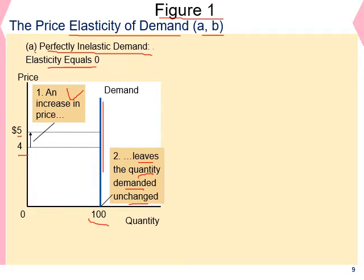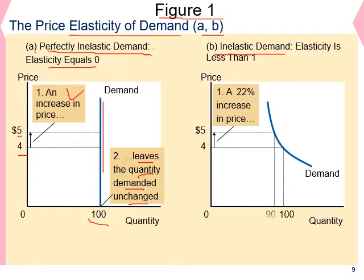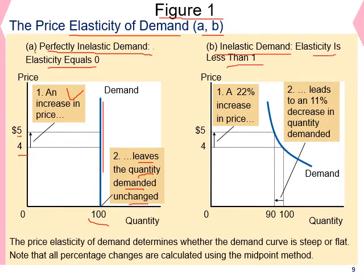An example of perfectly inelastic demand could be prescription drugs. If you have diabetes or high blood pressure, you take the same quantity of medicine every day. In that case, regardless of the price, you buy the same quantity of drugs every month. Panel B shows inelastic demand where the value of the elasticity is less than 1. For instance, a 20% increase in the price of the good led to an 11% decrease in the quantity. In this case, demand is inelastic: 11 divided by 22 equals 0.5, which is less than 1.